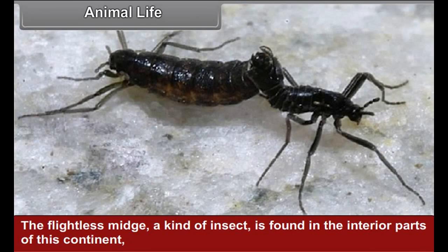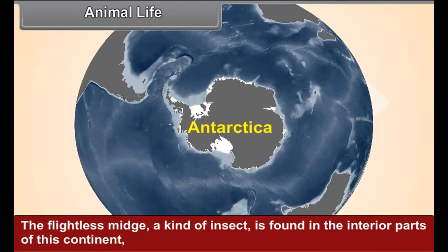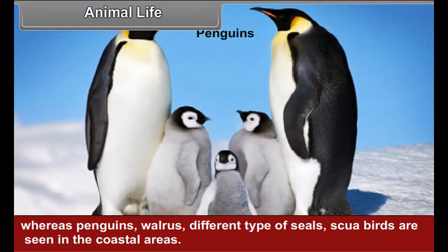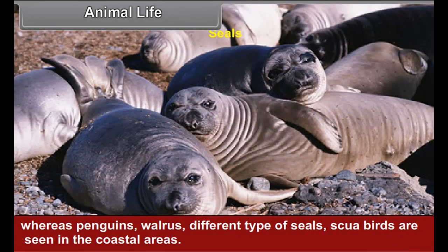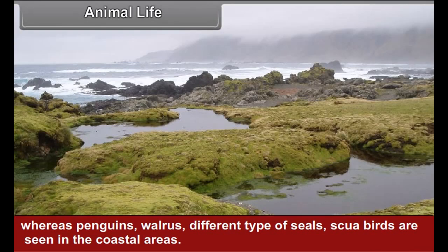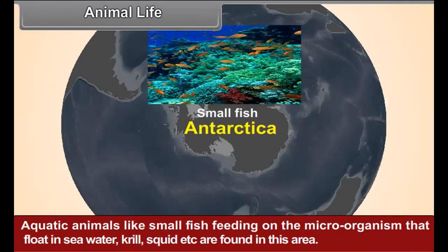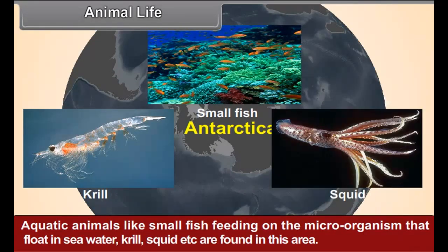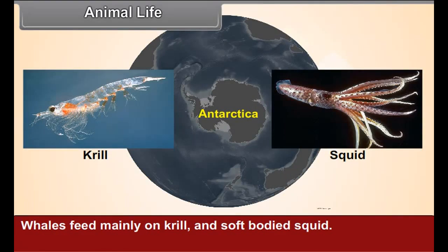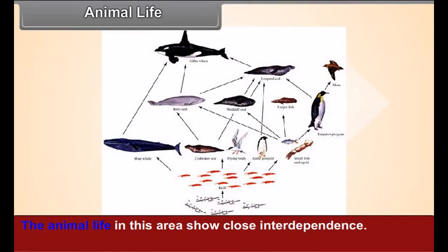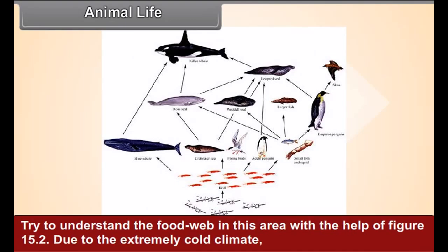Animal Life: The flightless midge, a kind of insect, is found in the interior parts of this continent. Whereas penguins, walrus, different types of seals, and skua birds are seen in the coastal areas. Aquatic animals like small fish feeding on microorganisms that float in seawater, krill, squid, etc. are found in this area. Whales feed mainly on krill and the soft-bodied squid. The animal life in this area shows close interdependence. Try to understand the food web in this area with the help of figure 15.2.